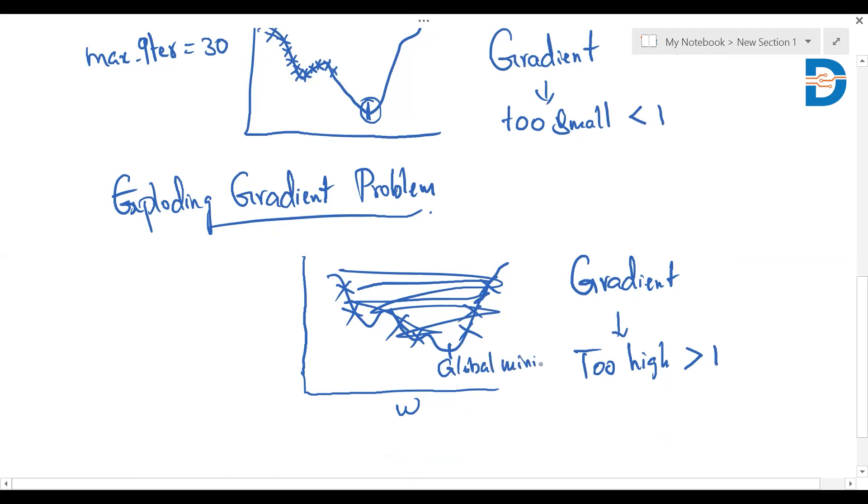we will not find the global minimum in this point either. When the gradient is exploding, one time it is here and the next minute it is here and the next minute it is somewhere here, the gradient is jumping far too away from each other. In this point as well, we will not get the global minimum. This is what we call it as exploding gradient problem.